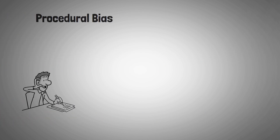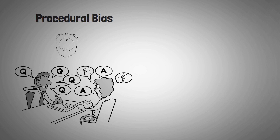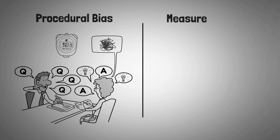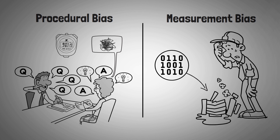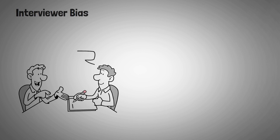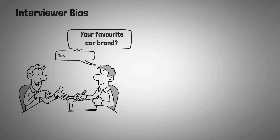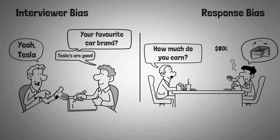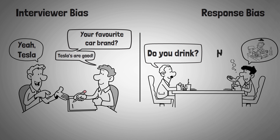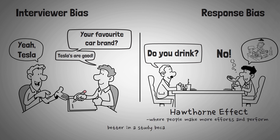Procedural bias arises when the way the experimenter carries out a study affects the results — for example, if participants are given only a short time to answer questions, their responses will be rushed and not correctly reflect their opinion or knowledge. Measurement bias is a systematic error during data collection, occurring when equipment is faulty or not used correctly. Interviewer bias is when interviewers consciously or subconsciously influence responses by providing additional information and subtle clues, causing subjects' responses to lean toward the interviewer's own opinions. Response bias is a tendency to answer questions inaccurately — participants may provide answers they think are correct or more socially acceptable. Responders are often subject to the Hawthorne effect, where people perform better because they know they are being observed.